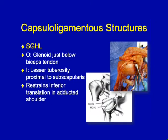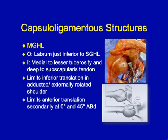The superior glenohumeral ligament really restrains inferior translation in the adducted shoulder. Of the three ligaments, it's probably the least important in preventing the anterior translation seen in a dislocation. The middle glenohumeral ligament probably has the most variation in both its size and even its presence. It primarily limits inferior translation in the adducted, externally rotated shoulder, and secondarily limits anterior translation at 0 and 45 degrees of abduction. So we see the middle glenohumeral ligament start to play a greater role in anterior stability, preventing against dislocation.